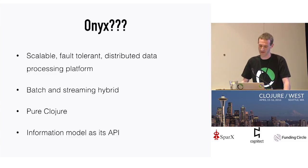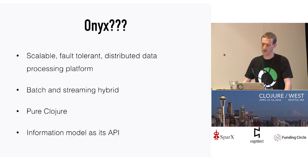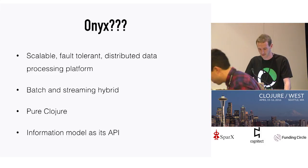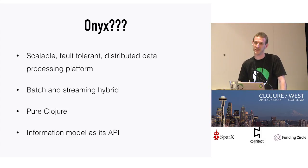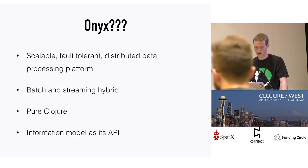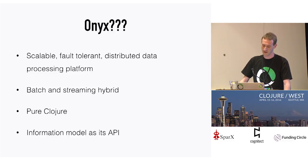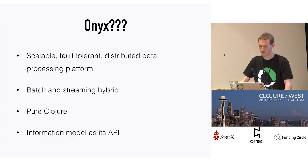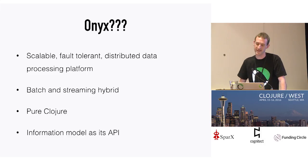So most of you know what it is, but if you want the really quick summary before we get moving: Onyx is a scalable, distributed, fault-tolerant, high-performance data processing platform written purely in Clojure, primarily intended to be used from Clojure. It has a batch and streaming hybrid model, so it's able to handle both of these workloads relatively transparently. The primary objective for developing Onyx was to produce a data processing platform whose API was its information model.